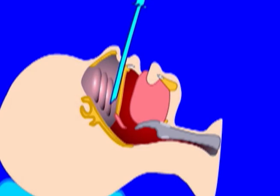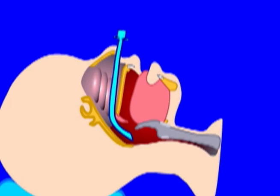Nasal airways are soft, flexible tubes which slide through one side of the nose. This positions the opening of the tube in the posterior pharynx behind the tongue. The opening is often, though not always, in line with the trachea.